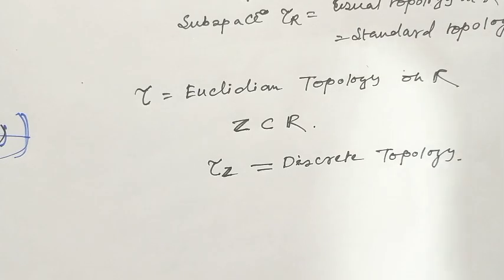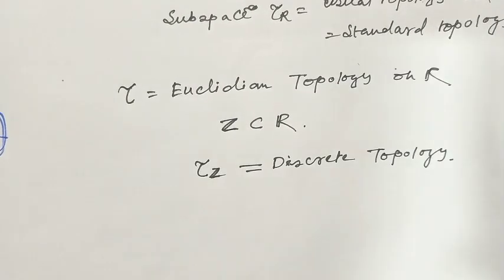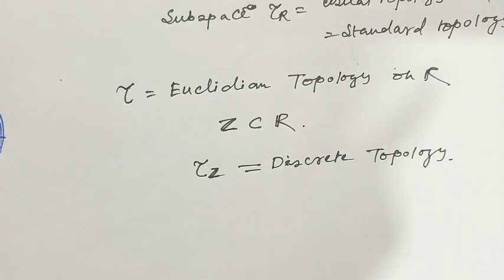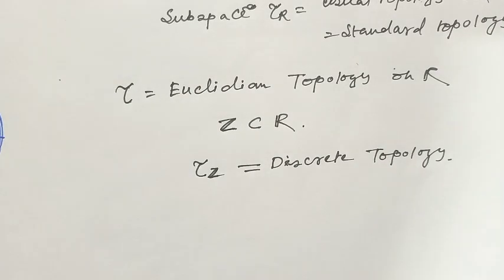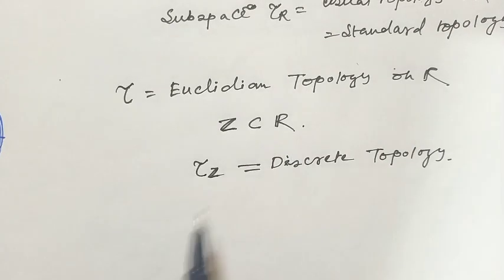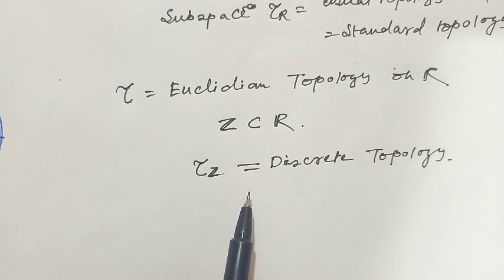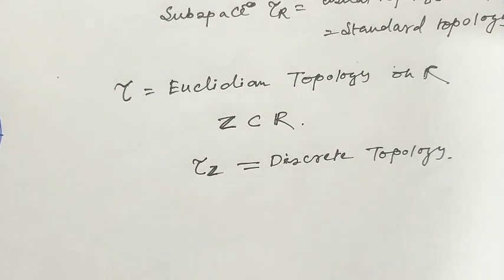Now I will see one more example because the subspace topology is very important for higher study. If you understand the examples in a better way, then you will understand other properties of compact and connected sets on subspace topology more clearly. The subspace topology on ℤ (the integers) inherited from R is actually the discrete topology.